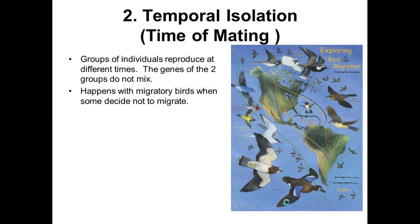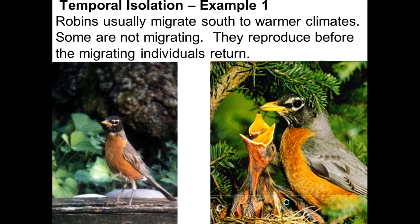Temporal isolation is well illustrated by birds and frogs, where they mate at different times. This can be due to migration — a group of birds that migrate versus those that don't, with different timing of their mating season so they don't mate. For example, robins that migrate south to warmer climates and some that don't migrate can no longer interbreed with each other.